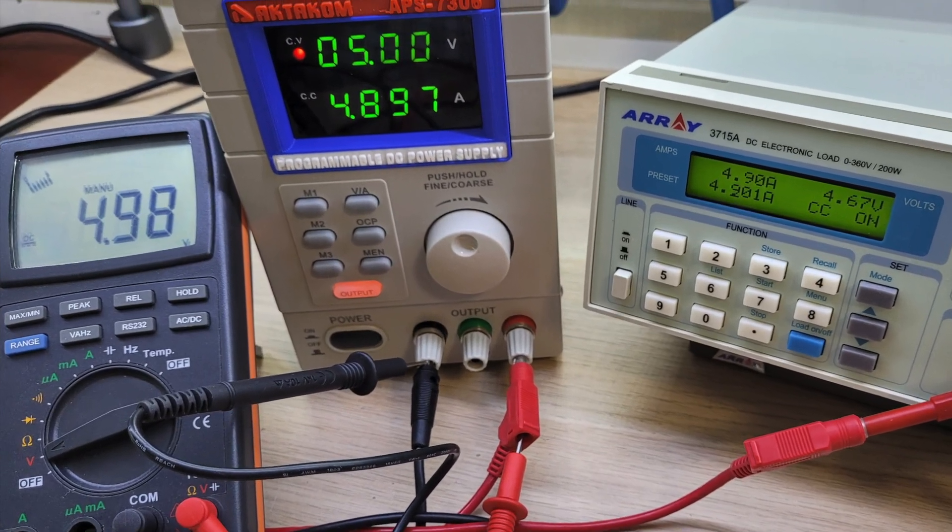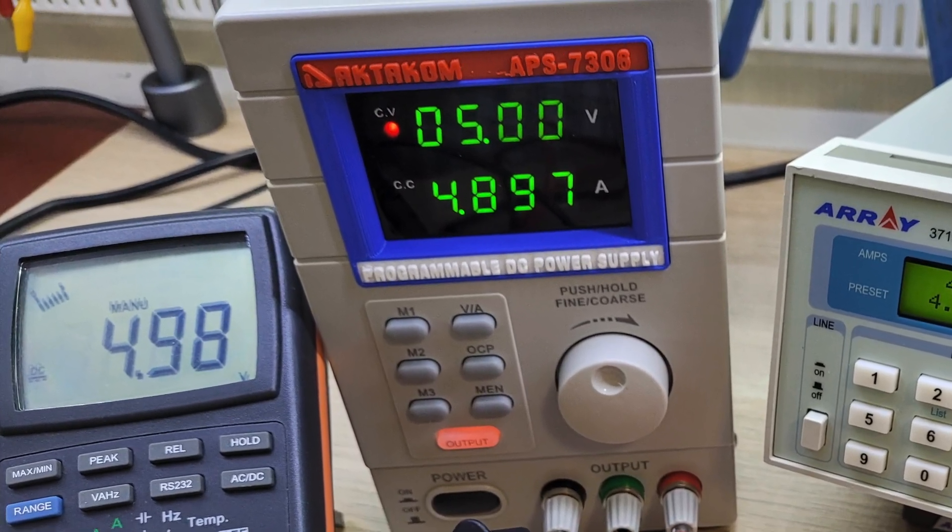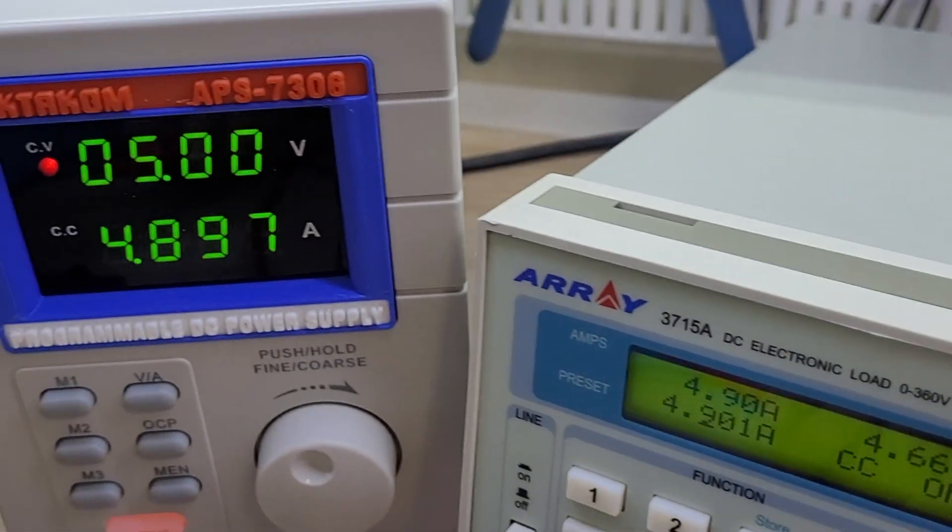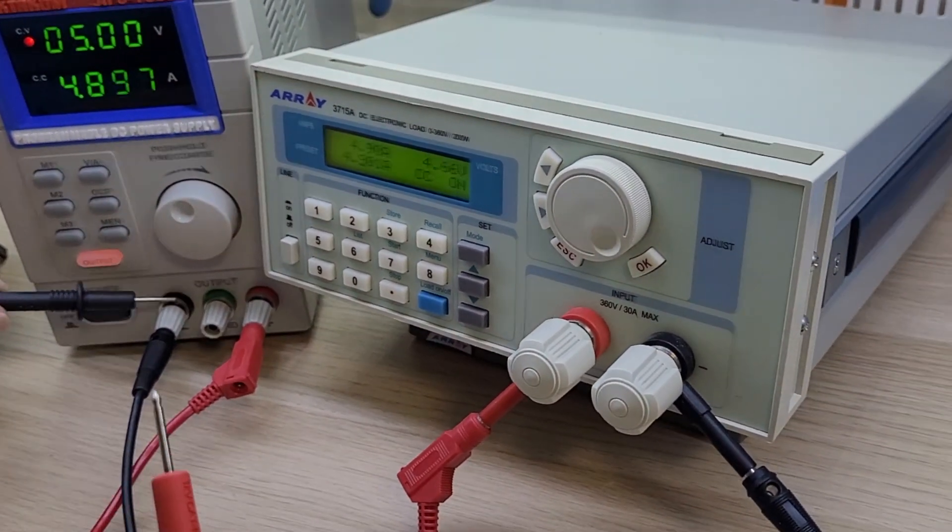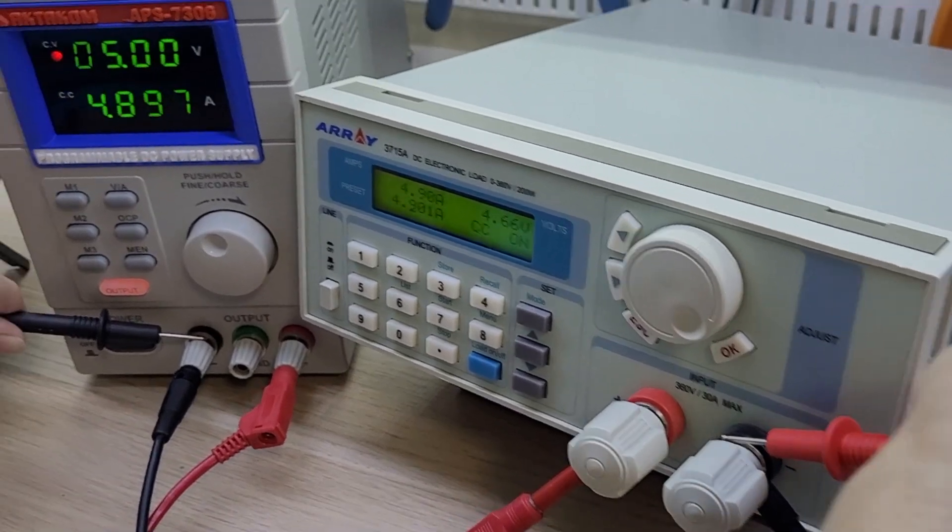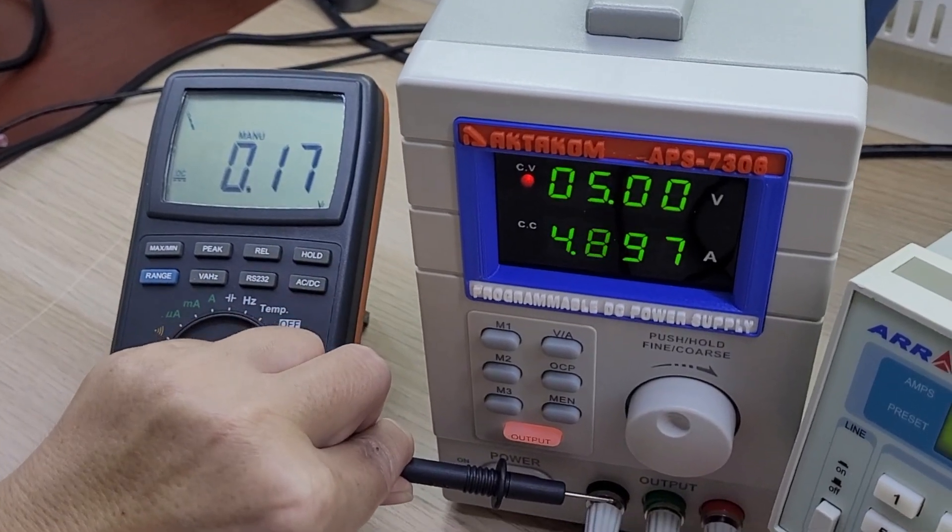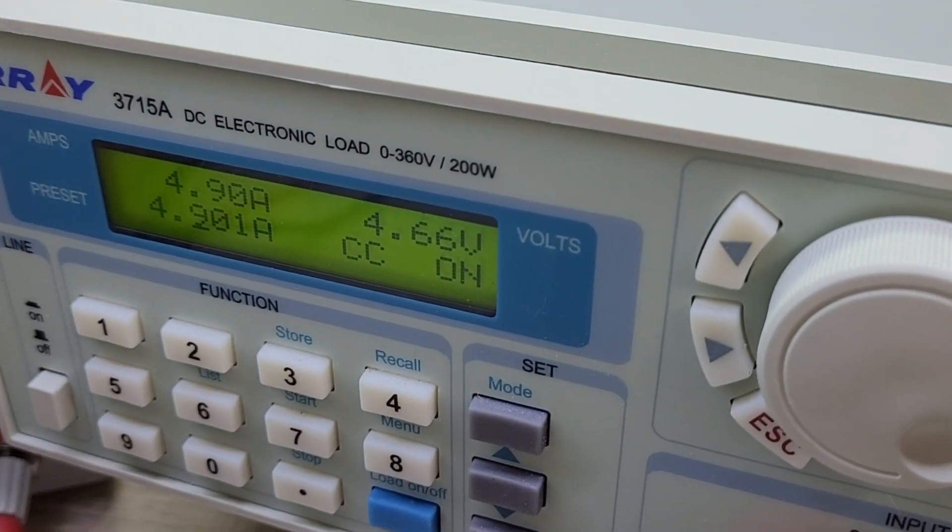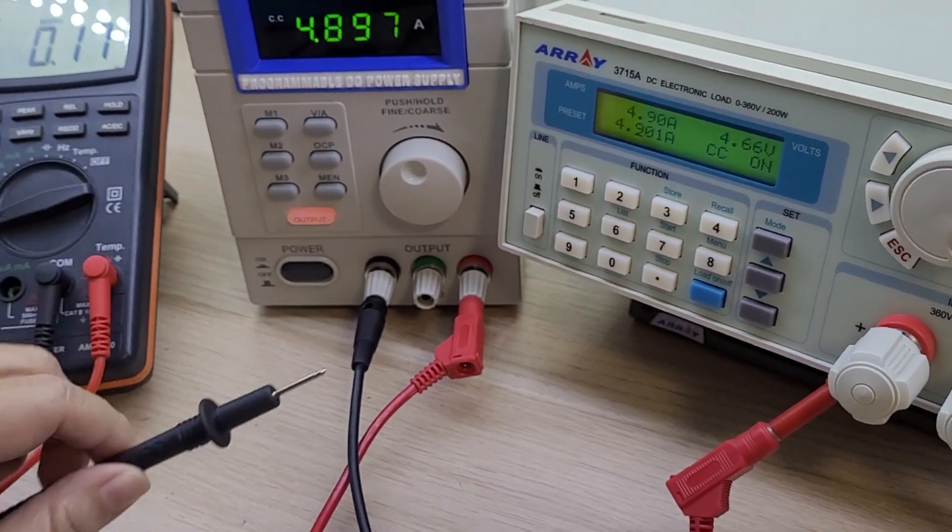Let's check the real values of the output voltage of the power supply using the Octacom AM1060 digital multimeter. However, the voltage at the input of the electronic load is 0.3V less than at the output of power supply APS7306.